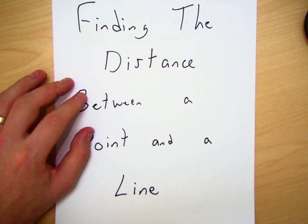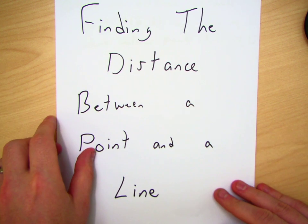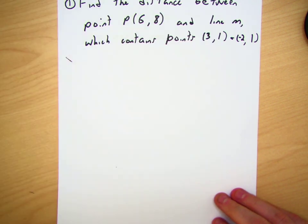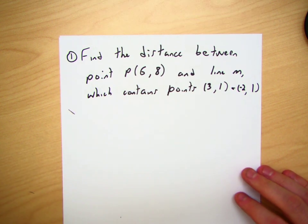Okay, we're going to work on finding the distance between a point and a line, and I'm going to illustrate this with an example here. The first example is this one, and it essentially says here,